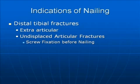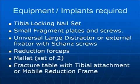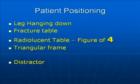What are the indications for a beginner? Extra-articular fractures — if you can lock two locking screws, that's good enough. As you advance with experience, for undisplaced articular fractures, fix screws before you begin nailing. Don't try to hold these fractures with the lock. What do we need? A small universal distractor, reduction forceps, mallet — I'll explain — and a tibial attachment or mobile reduction frame.